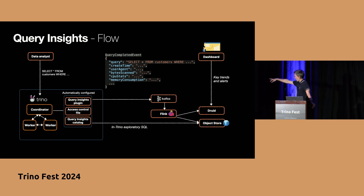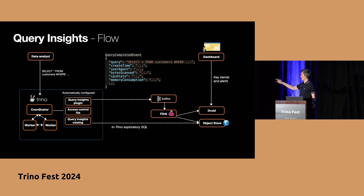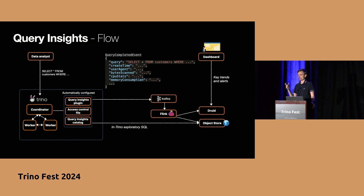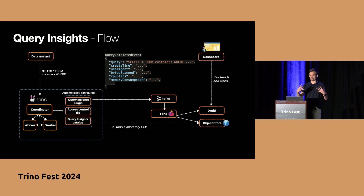What's also really cool is that we automatically configure an additional catalog for the Trino clusters we create — an Iceberg connector catalog. This allows the Trino cluster to read its own query history: the history the cluster itself produced is readable from that very same Trino cluster, because you have the catalog configured with all the storage secrets to read from that location. We also configure an access control file in the background to make sure each Trino cluster can only read the data it produced, and data from other clusters is not visible to it.